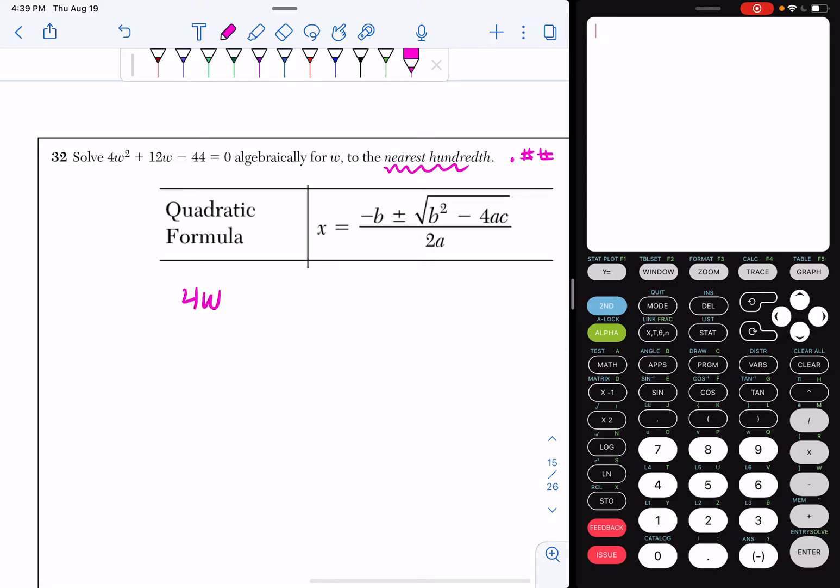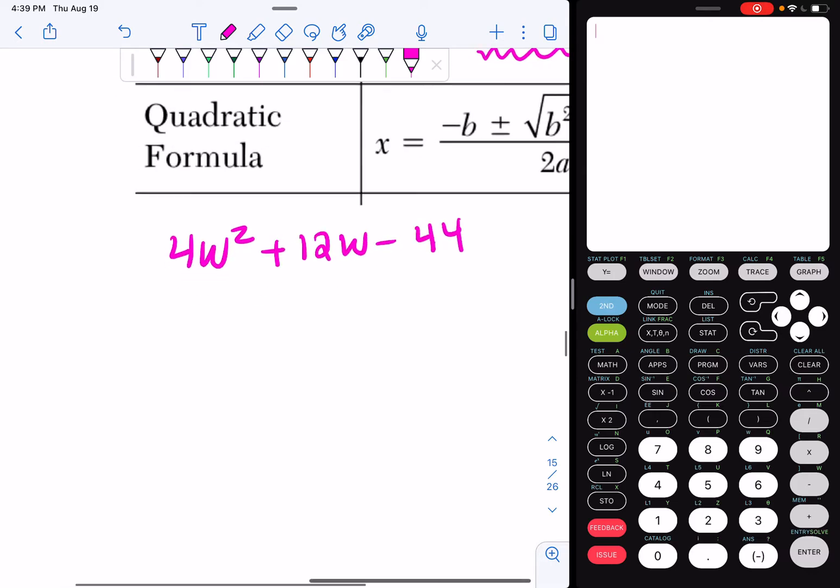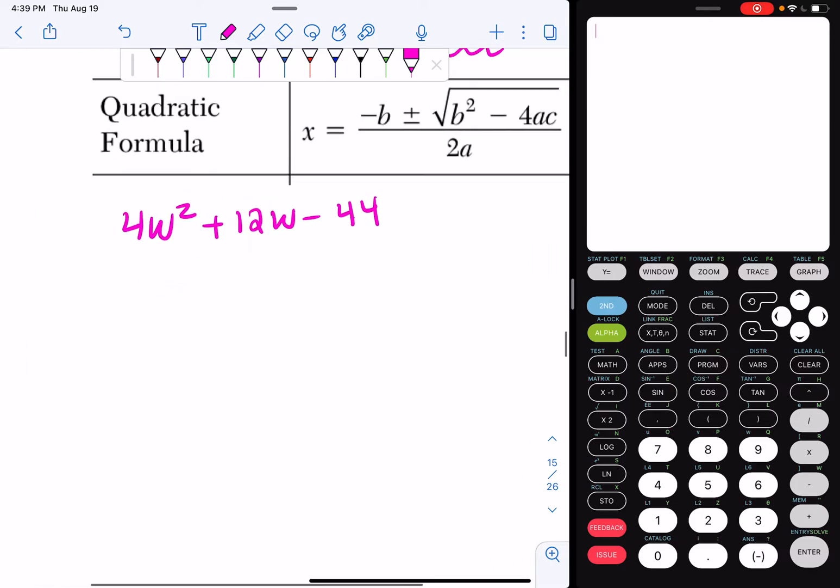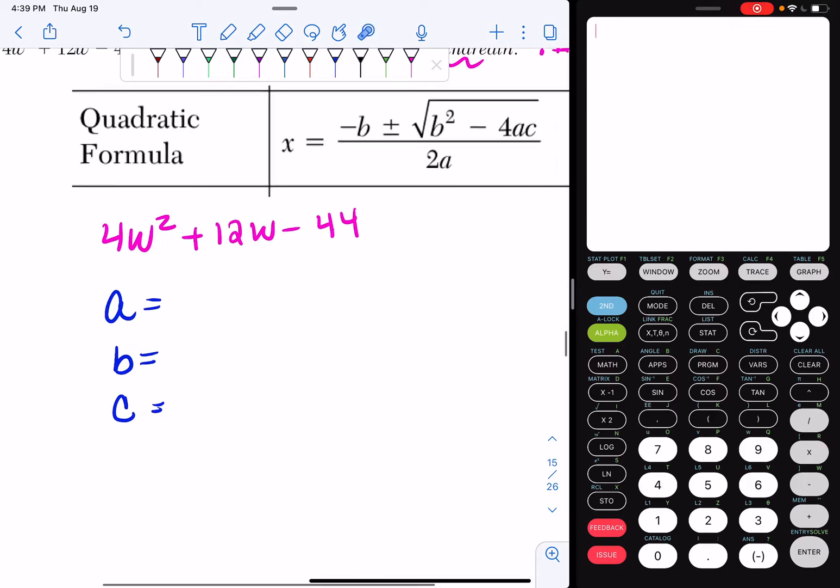So if I look at this equation, 4w squared plus 12w minus 44, I need to identify my a values, my b values, and my c values. My a value is the term attached to my w squared. I have a 4 attached to it, so a is equal to 4. My b value is the term number attached to my w. In this case, it's a positive 12, so b is equal to 12. And then my c value is the number hanging out by itself. If I look, it's a minus 44.